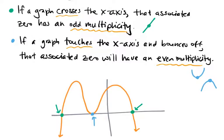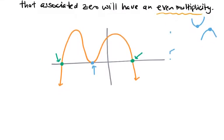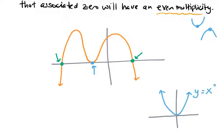So hopefully that distinction is pretty clear. The options are either it crosses through and it's an odd multiplicity, or it bounces and it's an even multiplicity. To relate to your prior knowledge, just remember y equals x squared — you've all worked with this quadratic before. Maybe we never realized that y equals x squared technically bounces at x equals zero because that's an even multiplicity. It has that zero twice — so in case that connection helps.